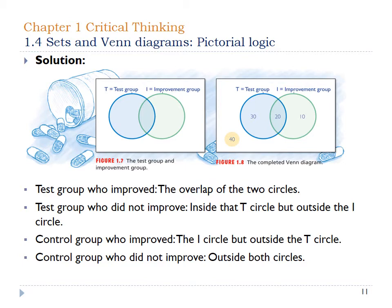In Figure 1-7 you can see the breakdown of the two circles — the test group and the improvement group. The only difference between Figure 1-7 and 1-8 is that 1-8 actually puts the numbers in. So 20% of the people in the test group also did improve, 30% in the test group did not improve, 10% of the people in the control group improved even though they weren't part of the actual test group, and the remaining 40% were in the control group and didn't improve at all.